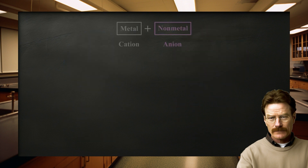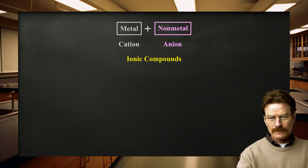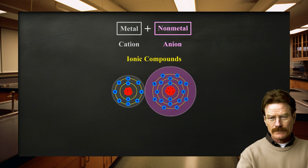In general, metal atoms tend to lose electrons to form cations, and nonmetal atoms tend to gain electrons to form anions. Thus, ionic compounds tend to be composed of metals bonded with nonmetals, as in NaCl, which is named sodium chloride.